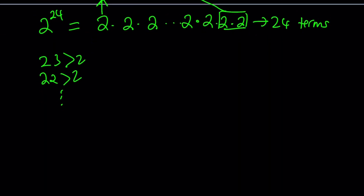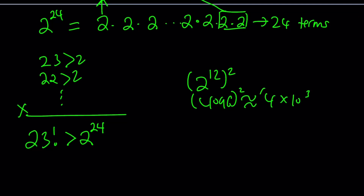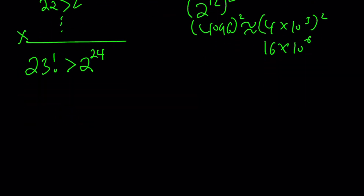Therefore, when we multiply together, 23 factorial is going to be greater than 2 to the power 24. You might think 2 to the power 24 is a very large number, but it's not that large. It's 2 to the power 12 squared. 2 to the power 12 is 4,096 — roughly 4 times 10 to the power 3. Squared, that's about 16 times 10 to the power 6, around 16 million. That's not huge. But 23 factorial is going to have a lot of numbers in it.